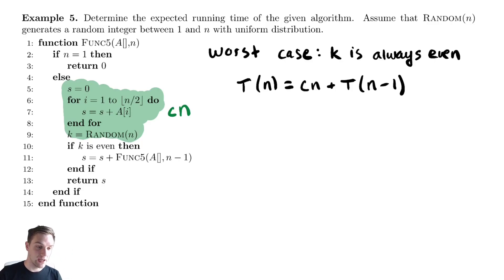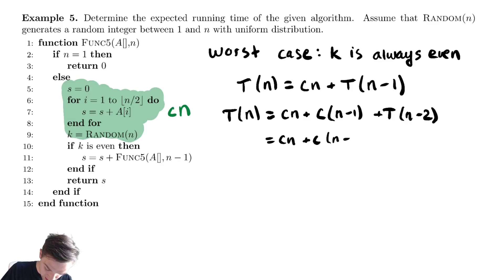We have seen this recurrence relation several times so we will go through it really quickly. T(n) equals cn plus, make a substitution and we get c(n-1) plus T(n-2). Make another substitution. We get cn plus c(n-2) plus T(n-3).